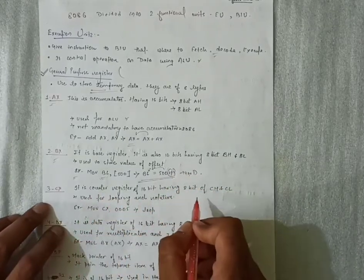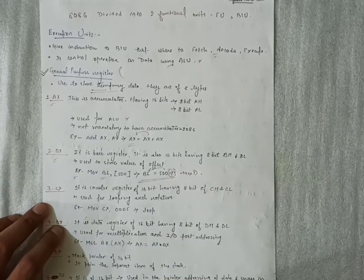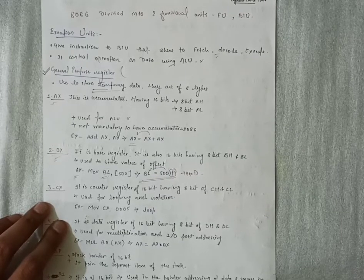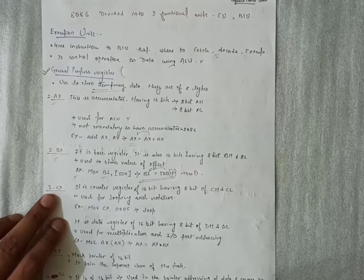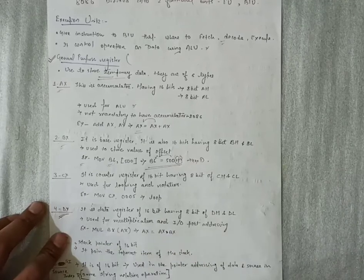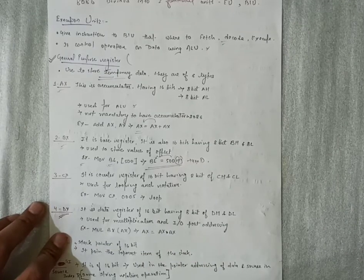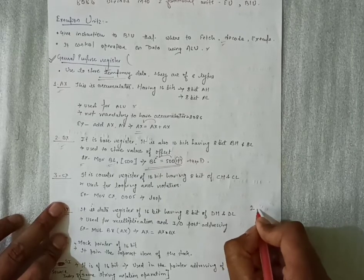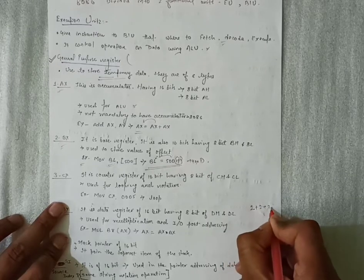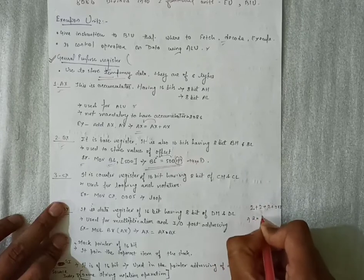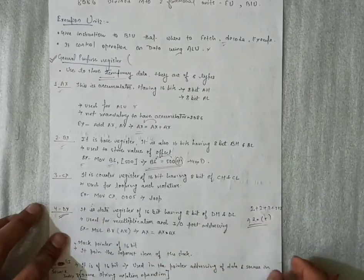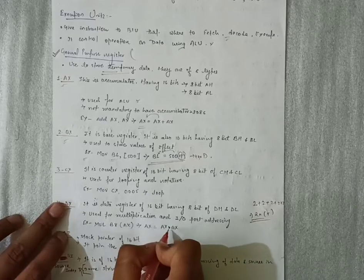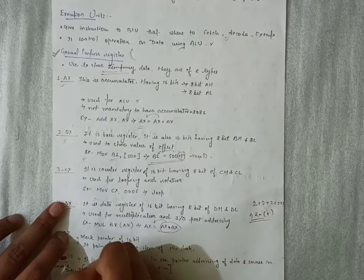The third one is CX, the Counter Register. It is also 16-bit, composed of CH and CL. It is used for looping and rotation. If the same task has to be performed again and again, this register comes into picture. After that, DX is the Data Register. As the name suggests, it is used for keeping data and for multiplication. For example, instead of adding two five times, we simply do two multiplied by five. The result of the multiplication of AX and BX is updated and stored in AX.